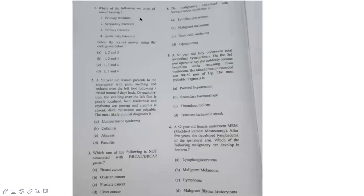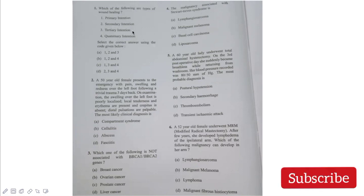The first question: which of the following are types of wound healing? Options are primary intention, secondary intention, tertiary intention, and quaternary intention. We know primary intention is suturing the wound, secondary intention is leaving it to heal by itself, and tertiary intention is delayed primary intention. There's no such thing as quaternary intention. So the answer is 1, 2, and 3.